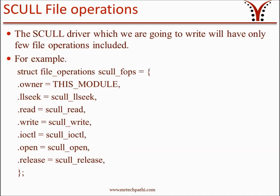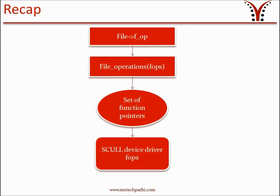Now we know about file operations. We have been learning a topic and applying it to the scull device driver. Remember, our main aim is to code small snippets of the scull device driver while we learn device driver programming, and finally integrate them into the scull device driver. Let's see how the scull device driver file operations look like. The scull device driver which we are going to write will have only a few file operations included. The structure scull_fops is initialized with various function pointers. The first parameter will be assigned to THIS_MODULE. The llseek function pointer is assigned to scull_llseek. The read function pointer is assigned to scull_read. Similarly, function pointers for write, ioctl, open, and release are assigned to respective scull functions. Just to recap, we learned that an open file in Linux is associated with its own set of functions. This set of functions are included in a field called f_op, which points to file_operations, usually called fops. We have gone through the set of function pointers in fops, and we have also seen how these function pointers are used in the scull device driver.